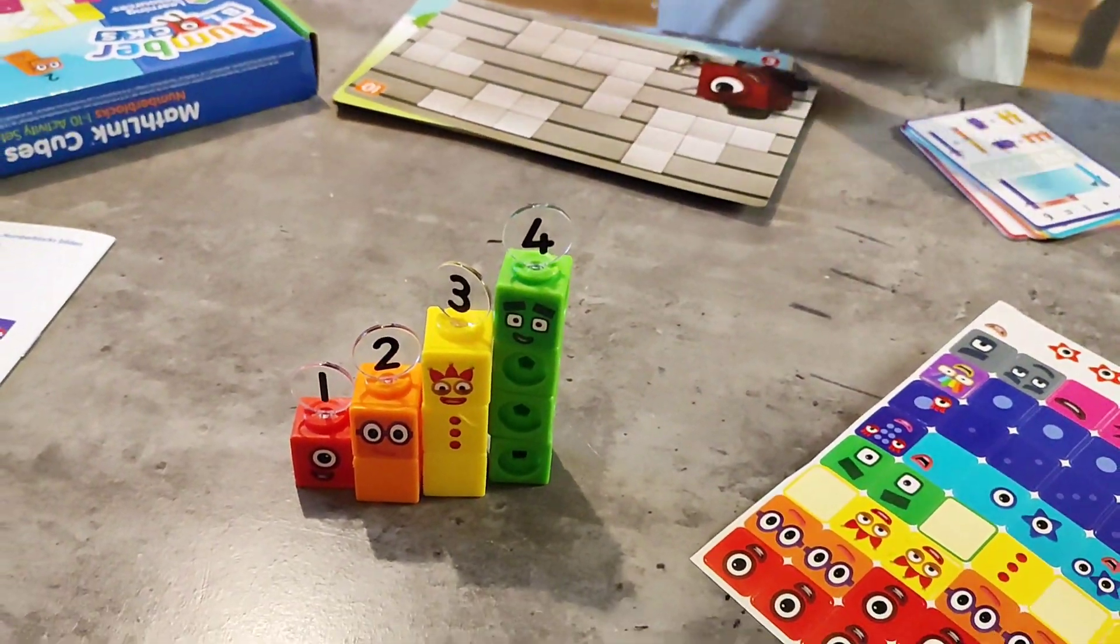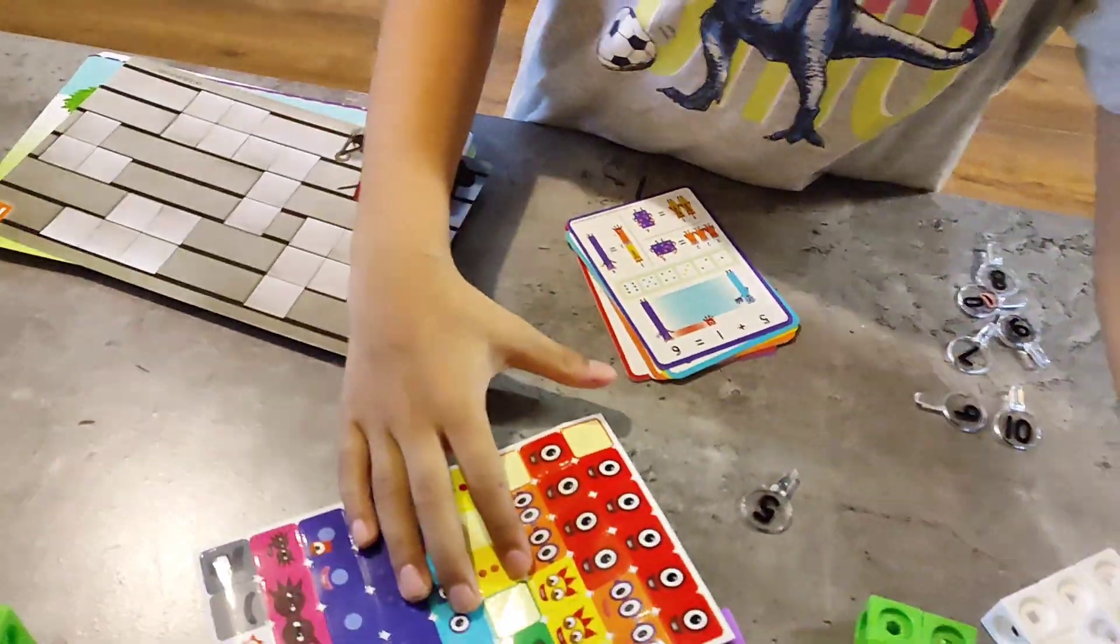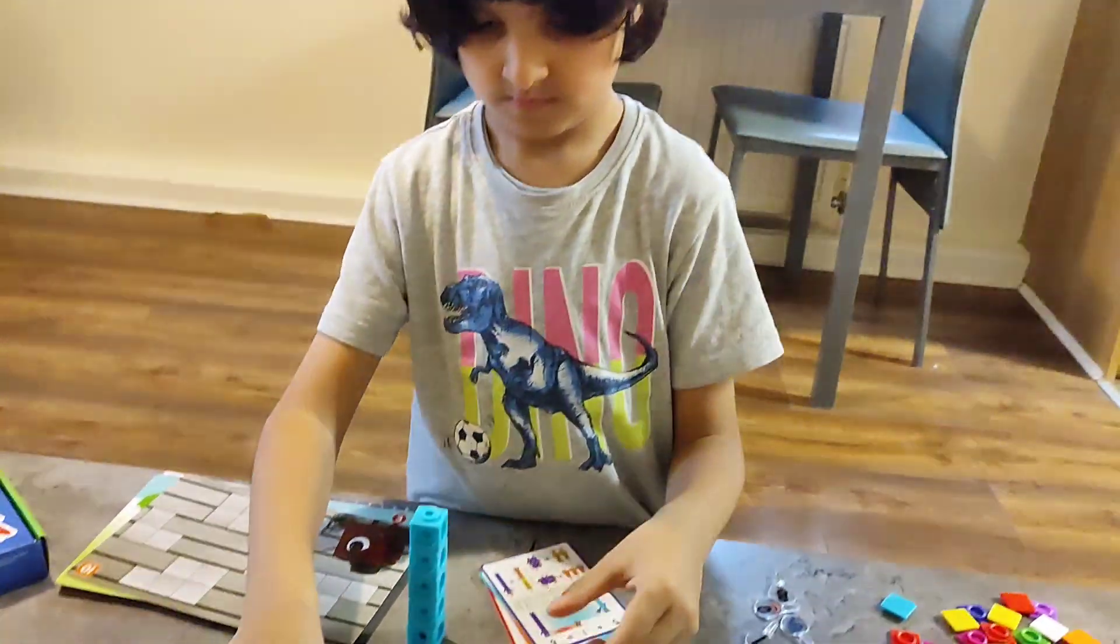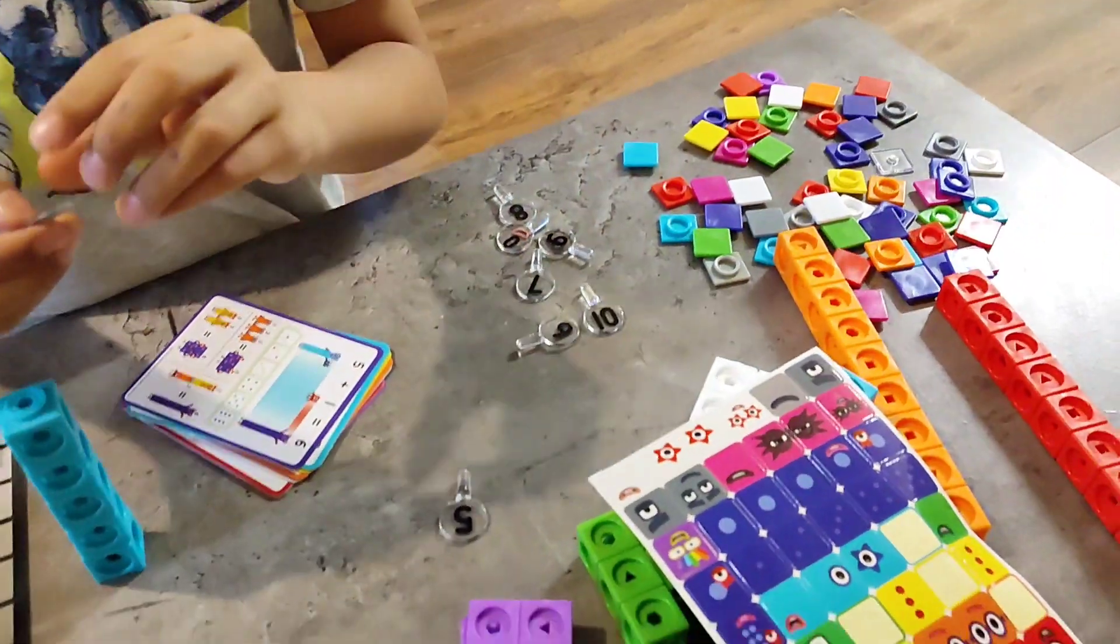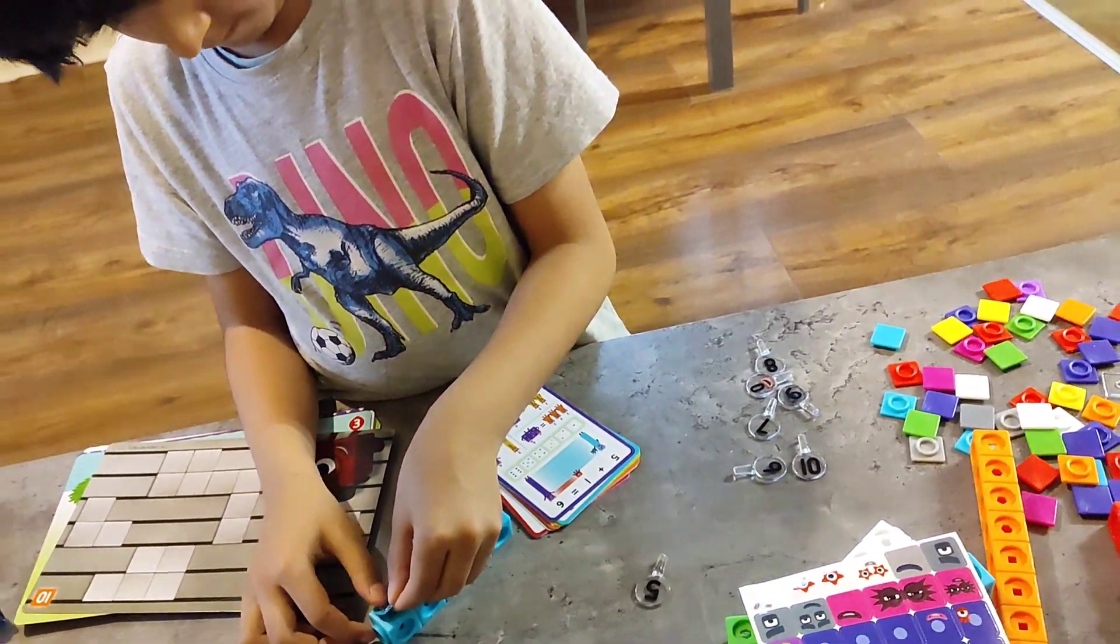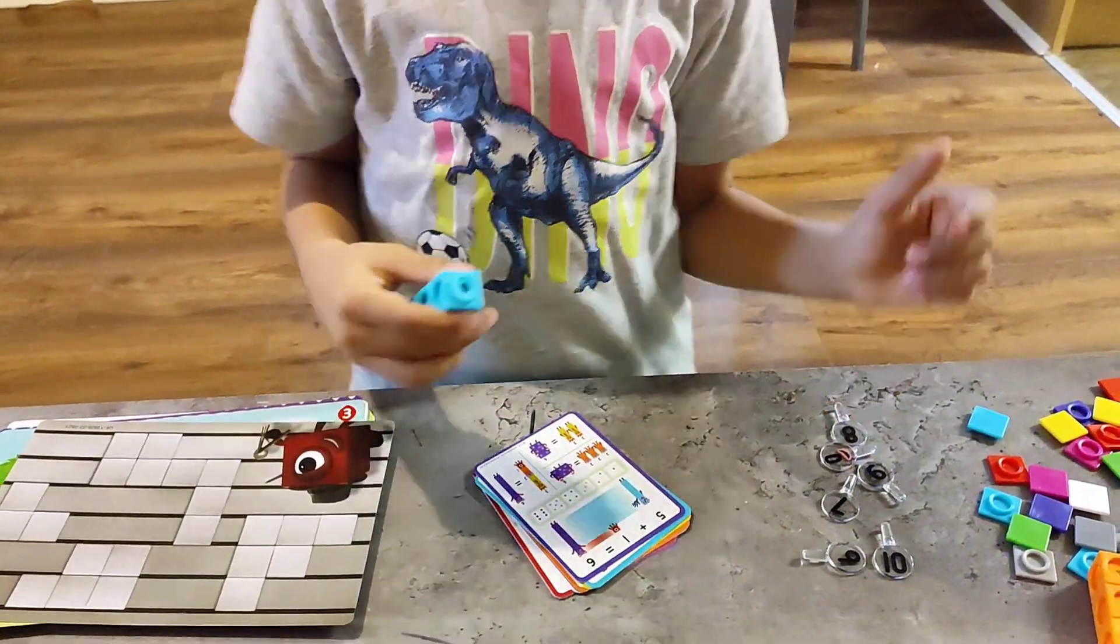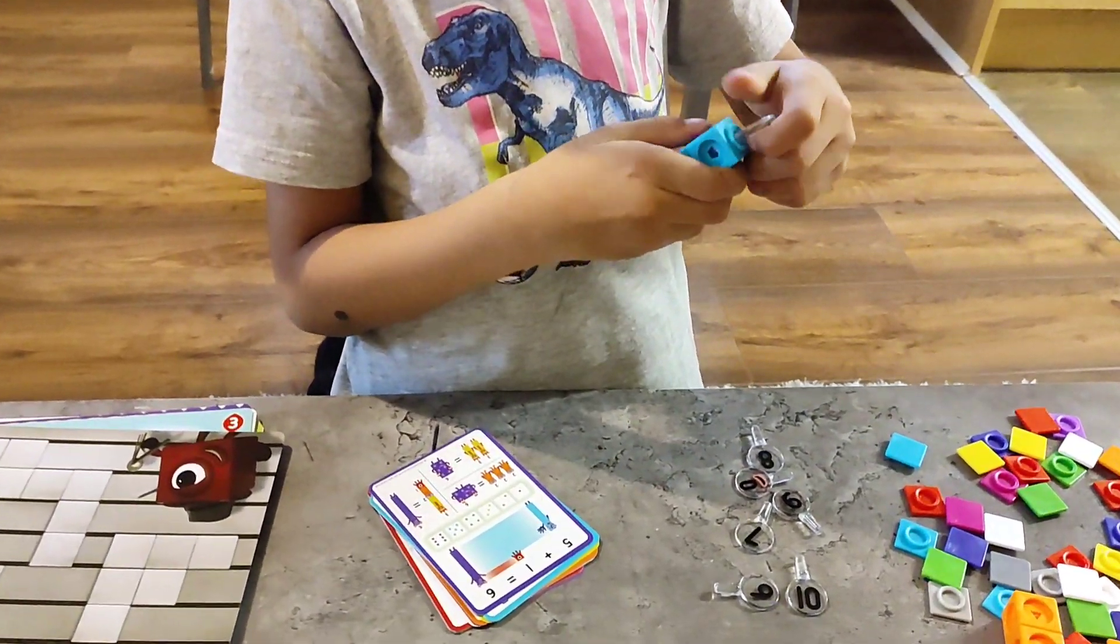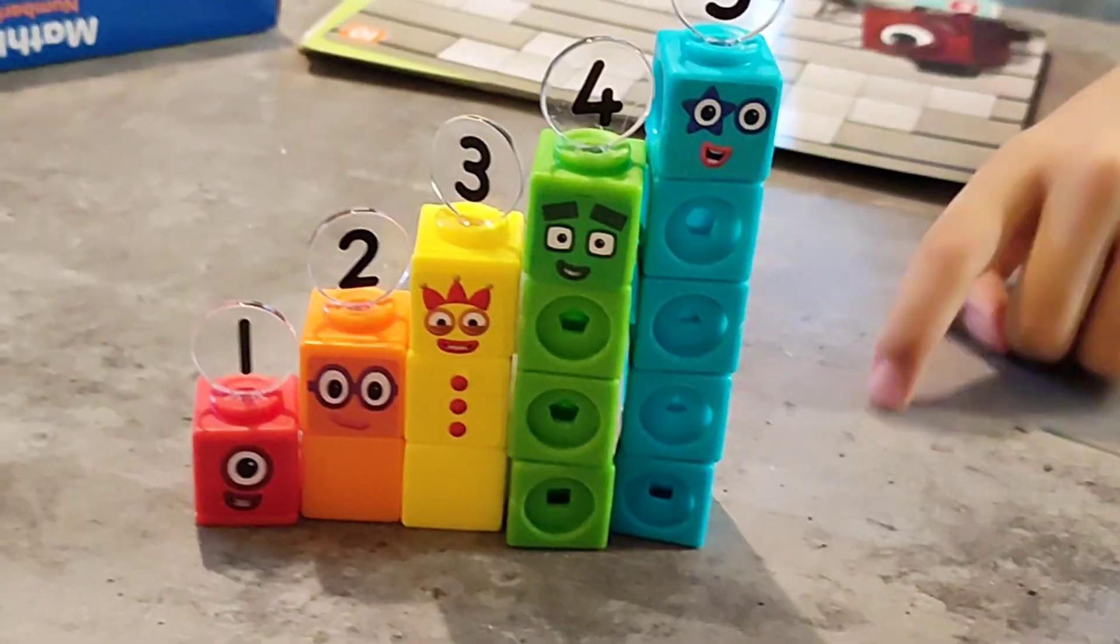Now we are going to make number block 5. We need 5 blue blocks. This is a sticker for number block 5. We put it right here. Now take the number link on. So this is number block 5.